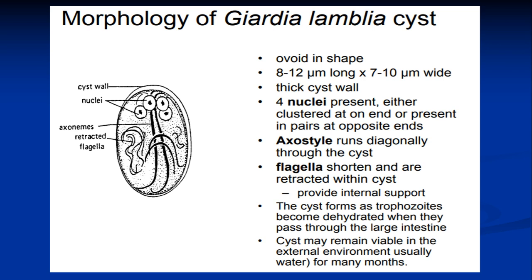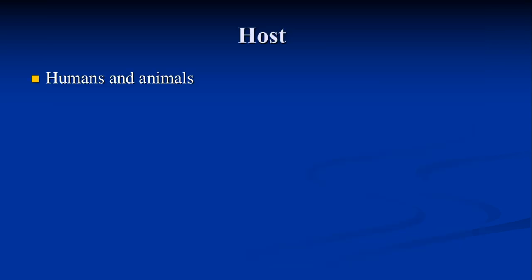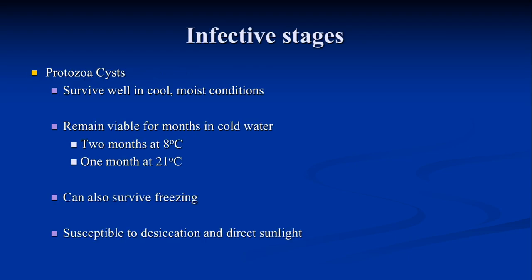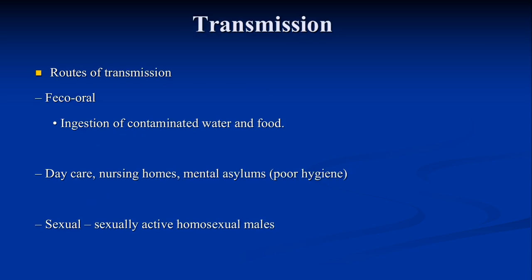Humans and animals are the hosts for this parasite. The cyst is the infective stage to humans. One important factor that helps the cyst cause disease is its high resistance towards various environmental factors. It can survive in cold and moist conditions, remaining viable for months in cold water — two months at 8 degrees Centigrade and one month at 21 degrees Centigrade. It can also survive freezing, but is susceptible to desiccation and direct sunlight.